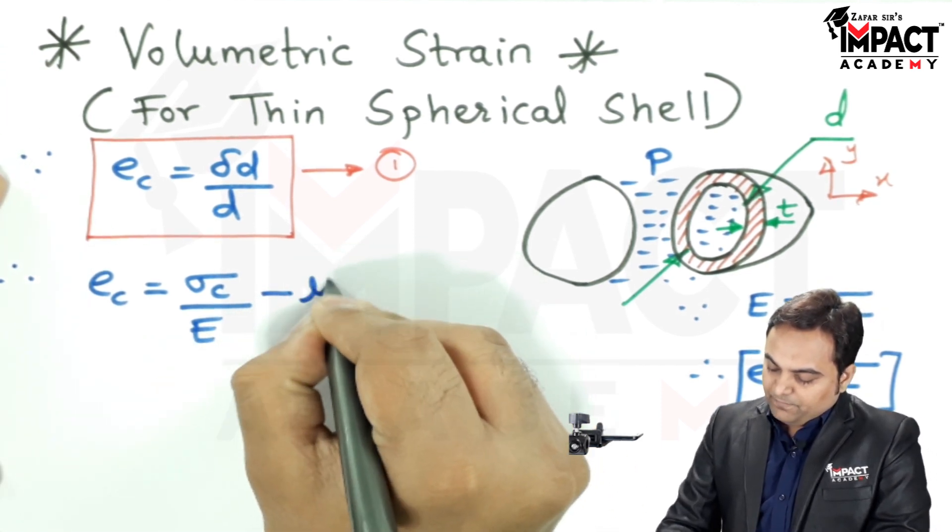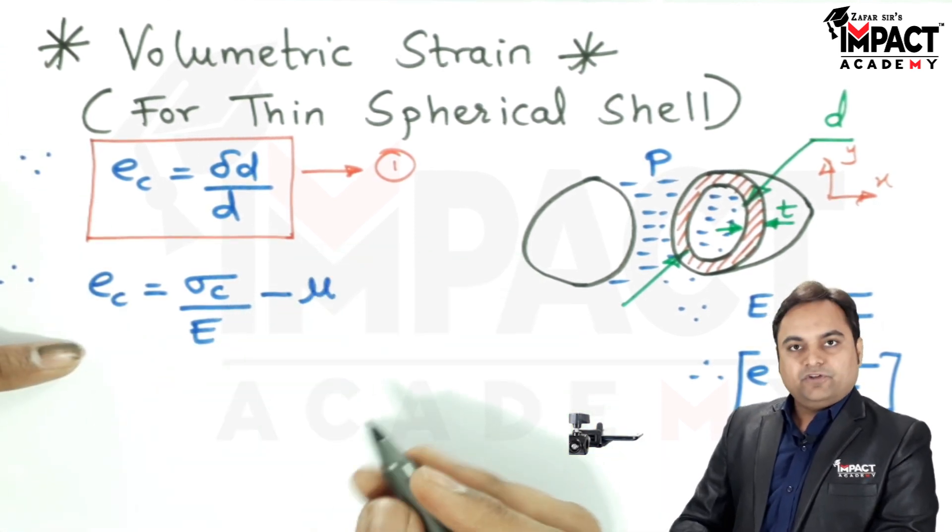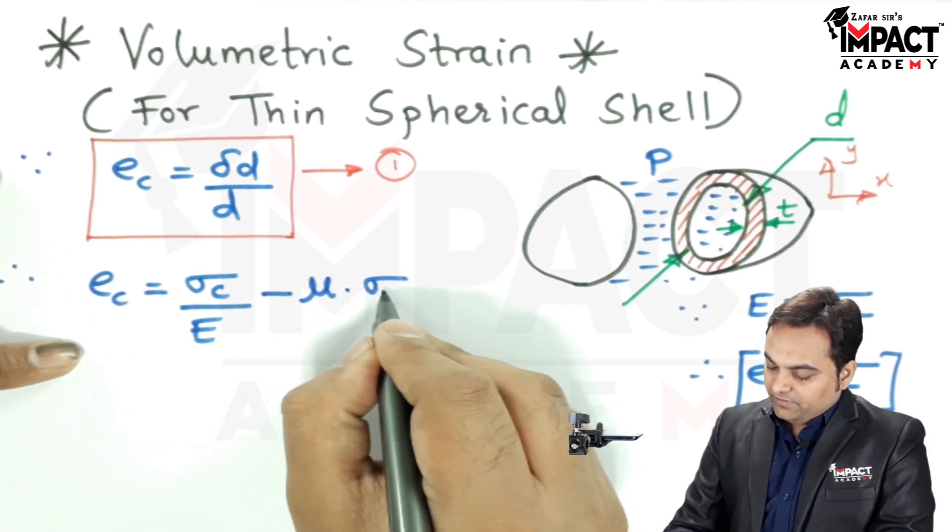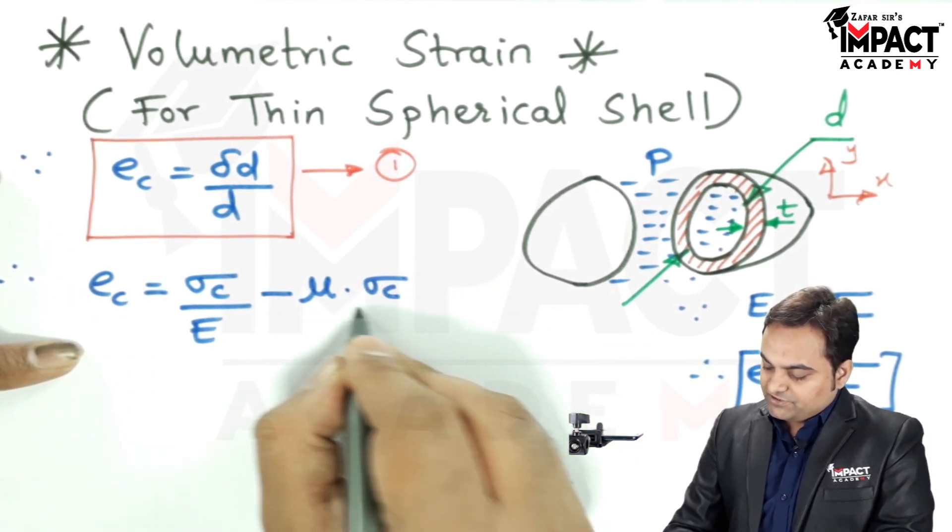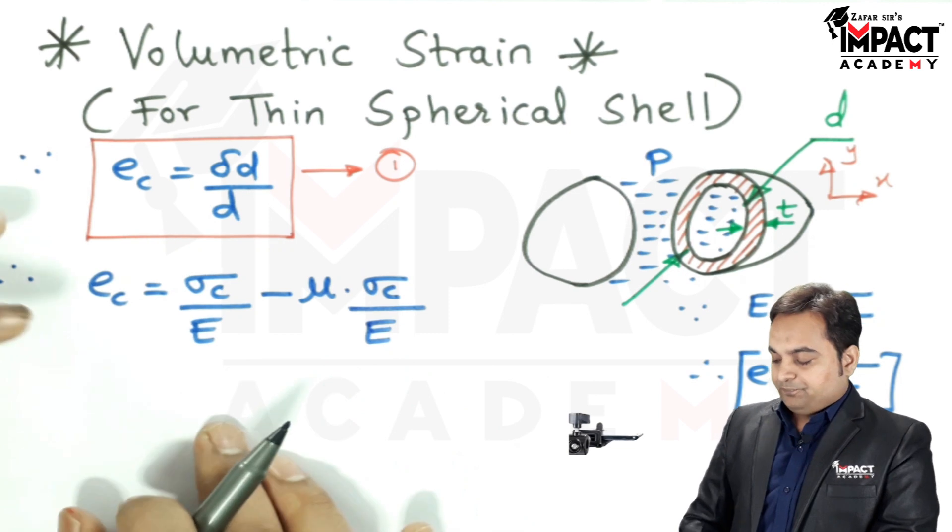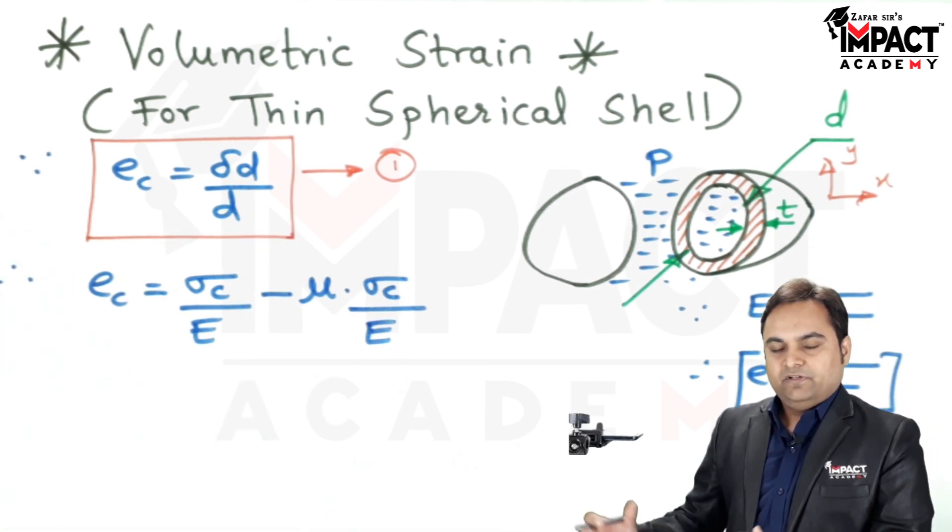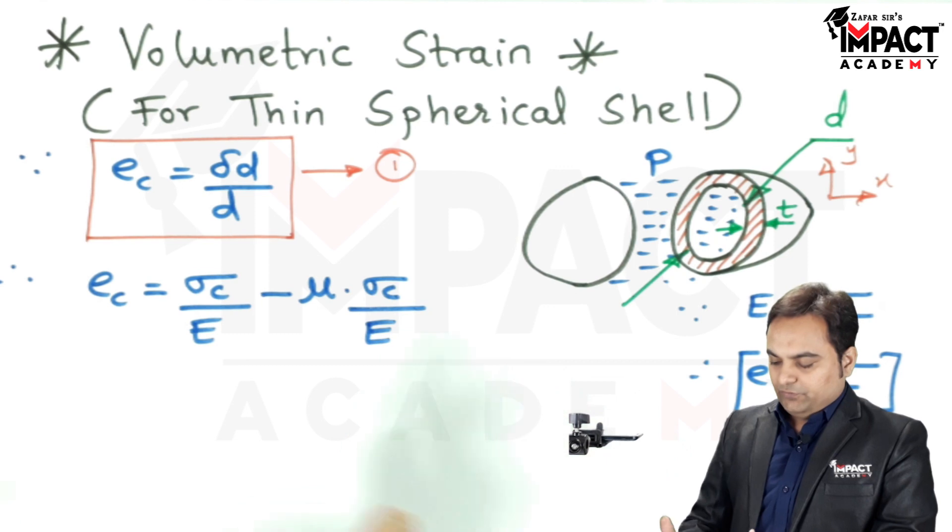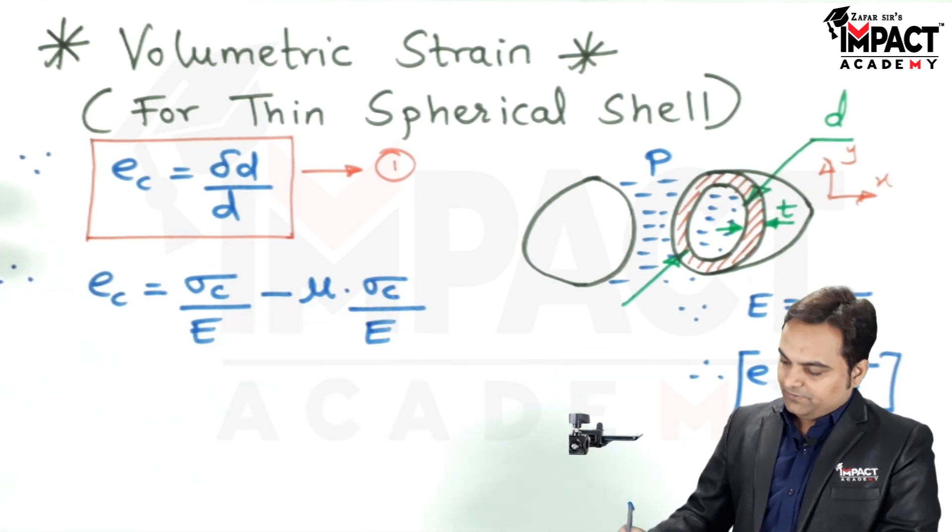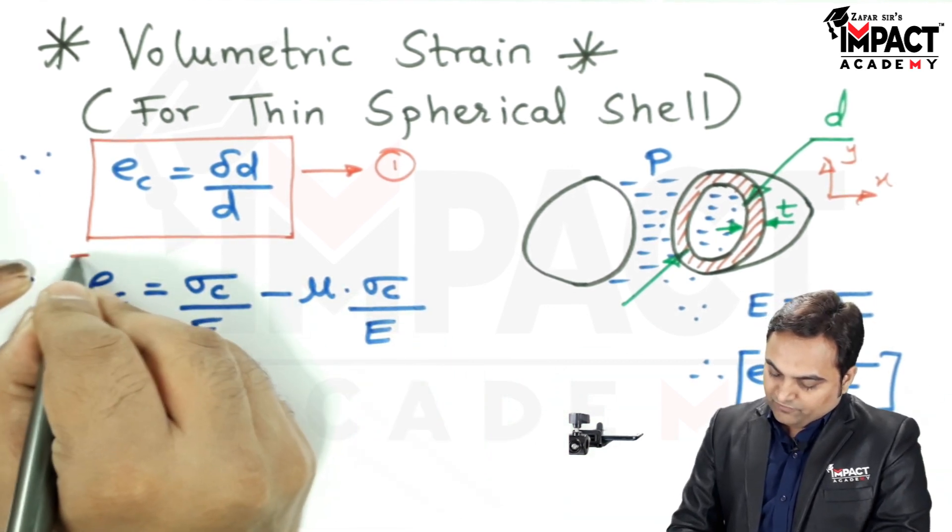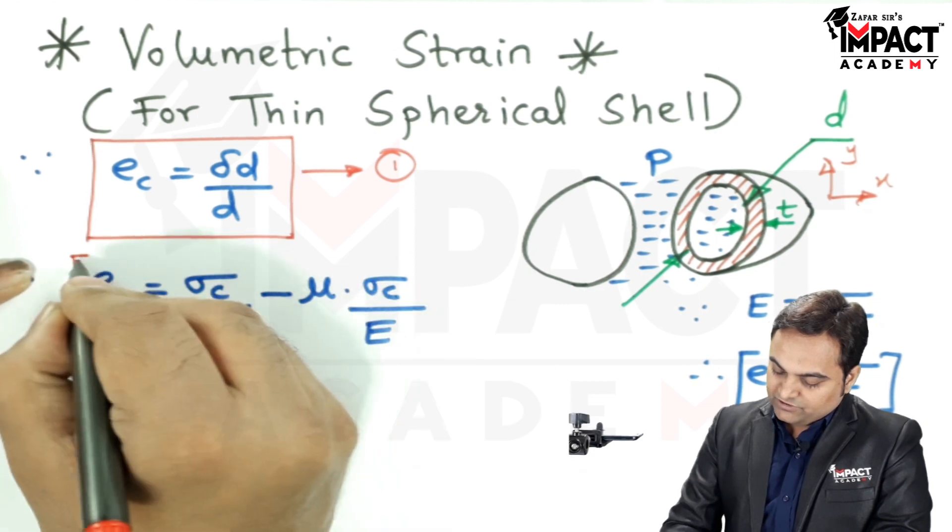So, minus mu, which is the Poisson's ratio, into again the circumferential stress upon Young's modulus. Because, from one side, if the diameter increases, then on the other side, it would be reducing. So, we have negative sign here. So, that is also the formula for the circumferential strain.